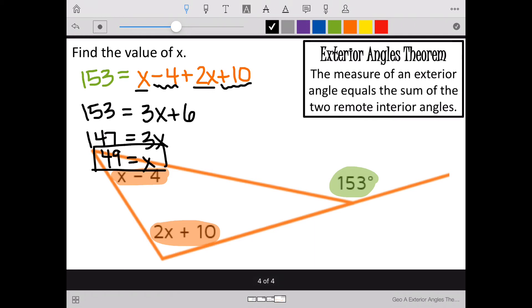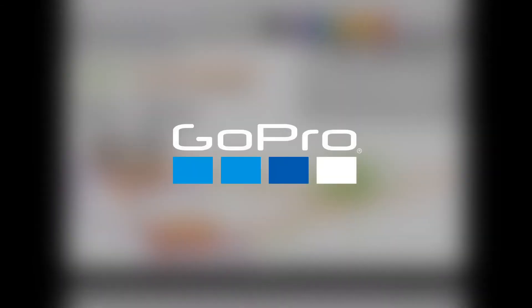Now let's just double check that this makes sense. So in this angle, if I substitute in the value of x, I get 49 minus 4, which would be 45. If I substitute x into this angle and do 2 times 49 plus 10, 2 times 49 plus 10 makes 108. Now, if I put these two angles together, will it make my exterior angle 45 plus 108? Yes, makes 153. So I know I am correct.